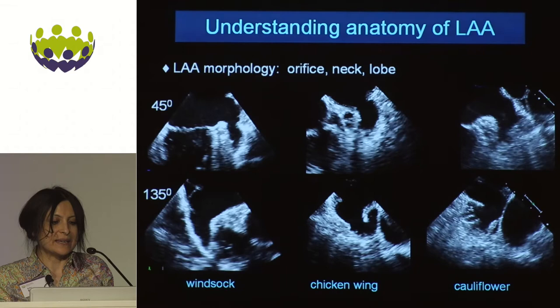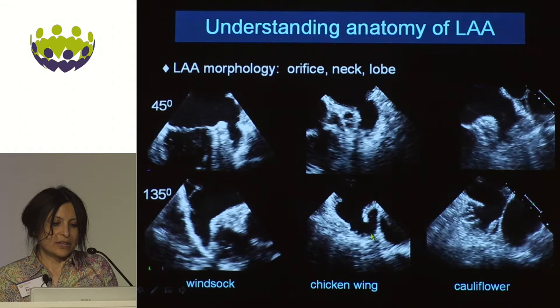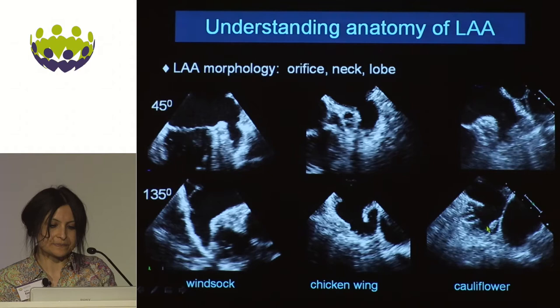The importance of understanding this is that as you go to higher degrees there are potentially multiple lobes of the left atrial appendage. To access usually the longest lobe is the important part. You need to look more anteriorly at the higher degrees — the 135 views and beyond. That's really what I wanted to highlight in the key anatomy when it comes to ECHO.